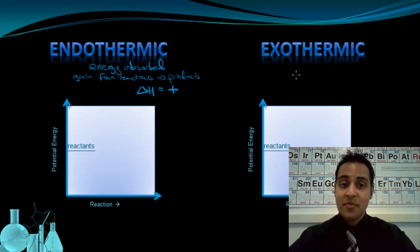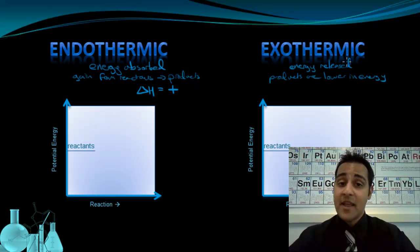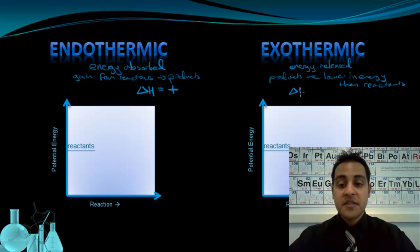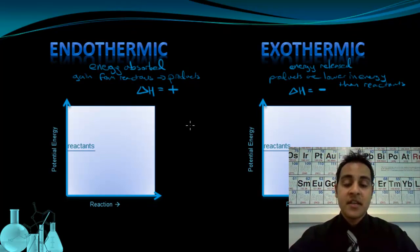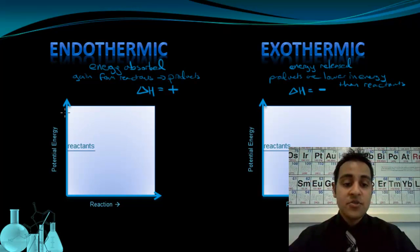For exothermic processes, we know that energy is released, which means that the products are lower in energy than the reactants. The delta H for exothermic reactions is negative. Now we can show the delta H — the heat of reaction — for endothermic and exothermic processes using what's called a potential energy diagram.